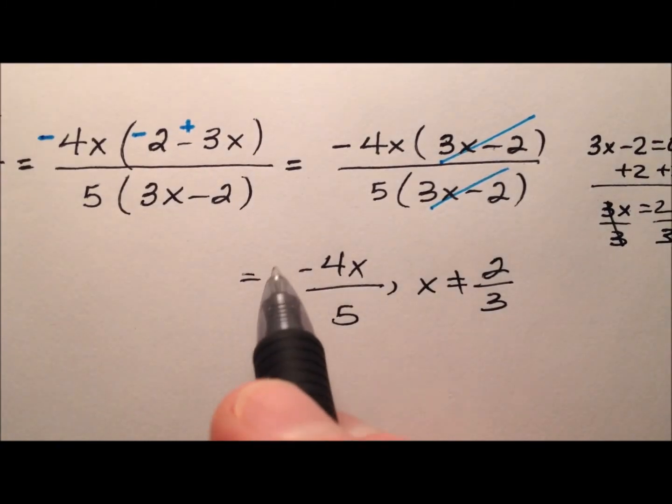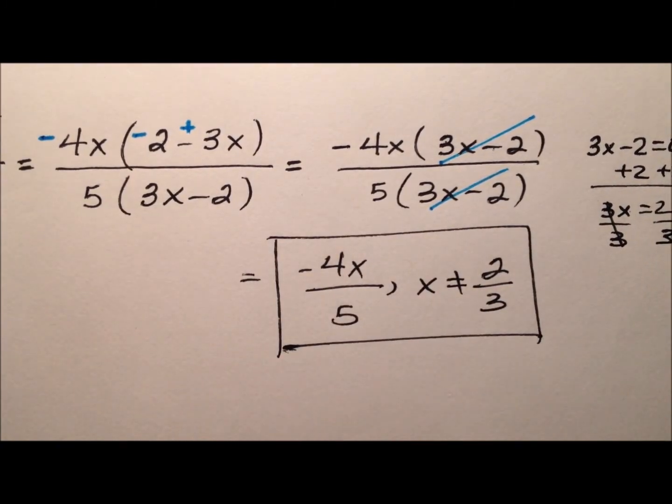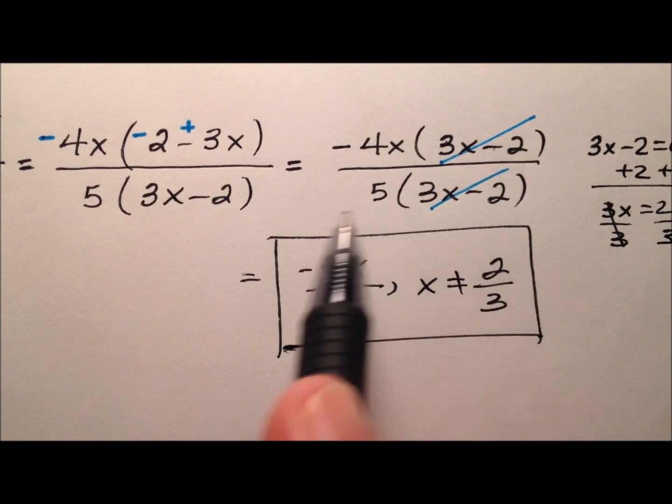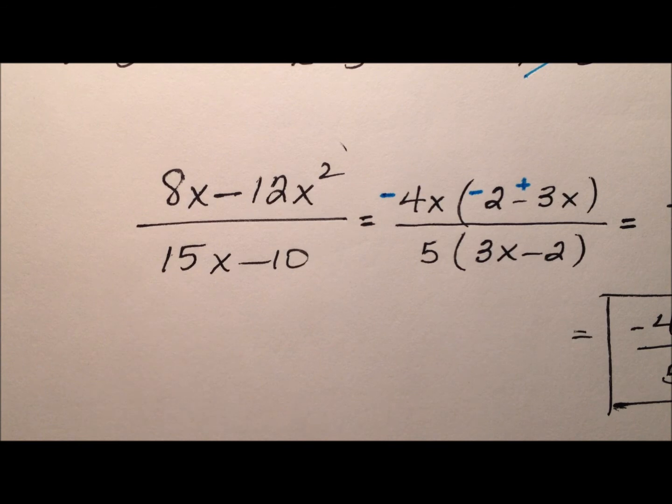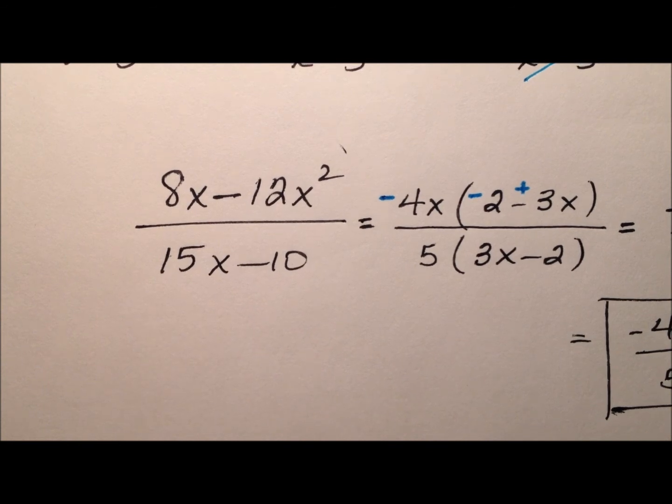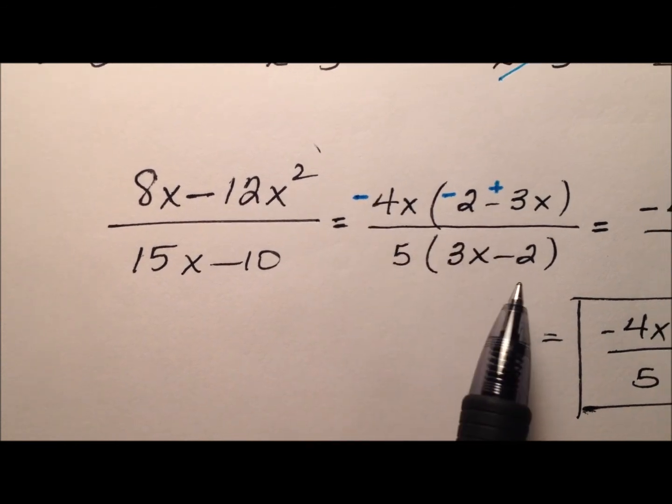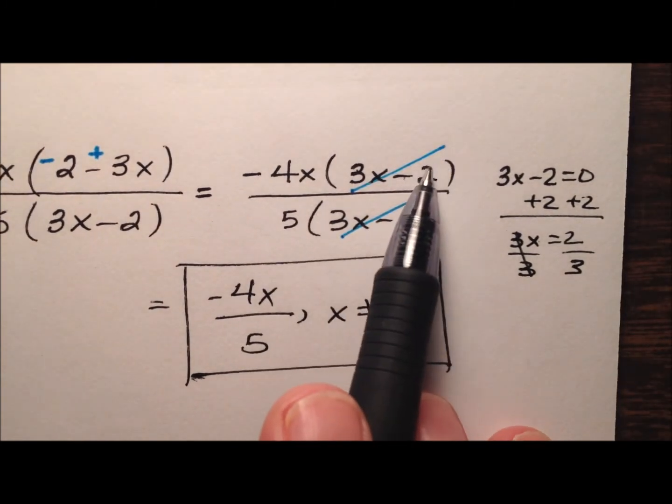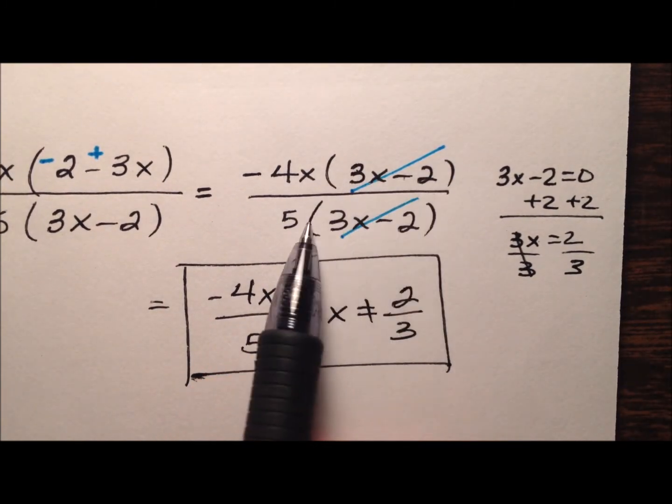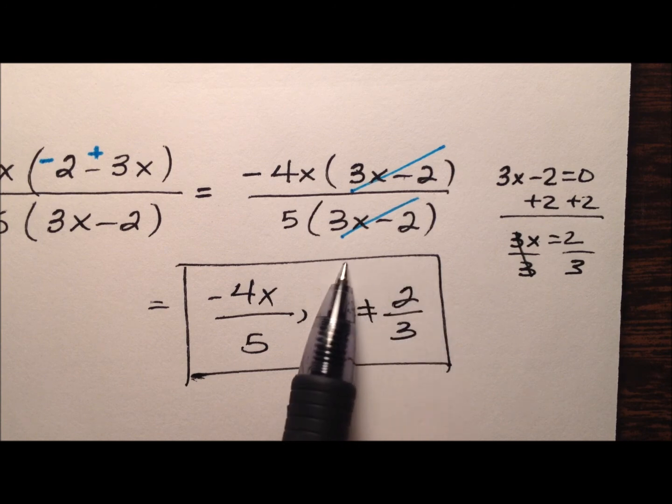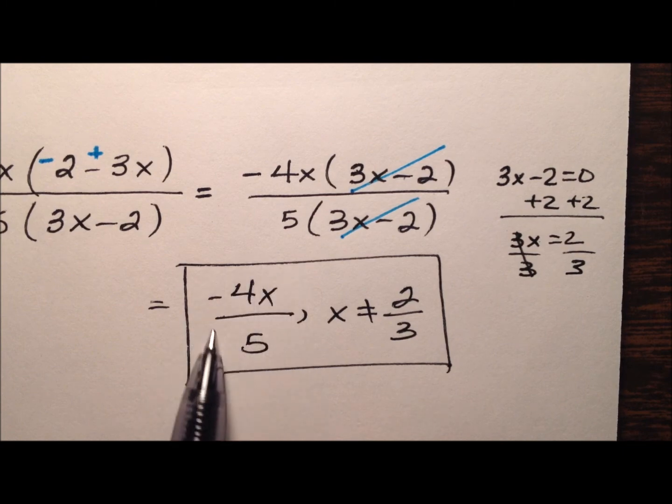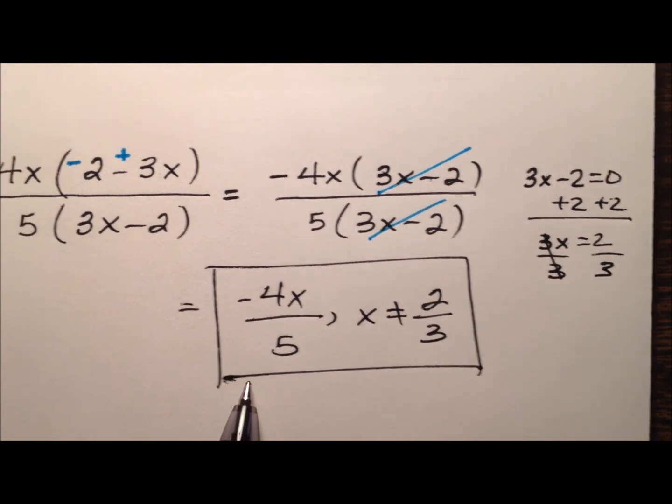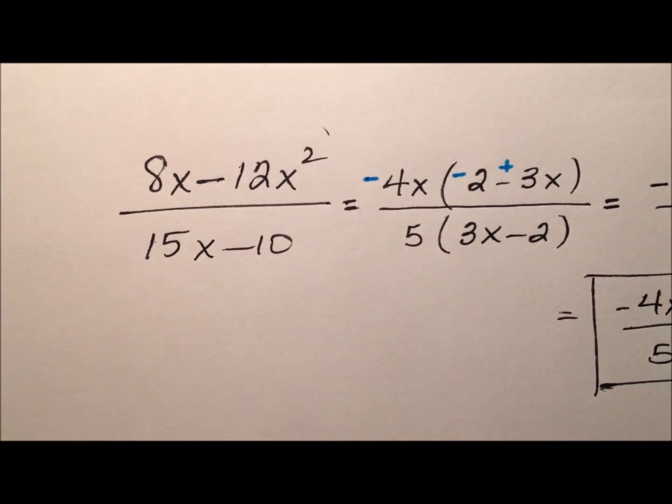So I have this simplified expression, which is an equivalent expression to my initial rational expression here. I have factored it using the greatest common factor. And then I ended up canceling out these 3x minus 2 factors. But I have to take the 3x minus 2 into consideration for the domain. So x cannot be 2 thirds. But negative 4x over 5 is equivalent to this first one.